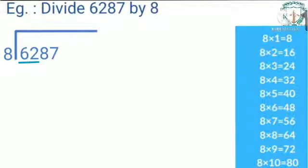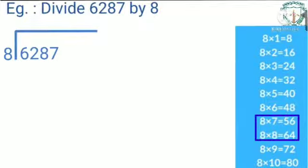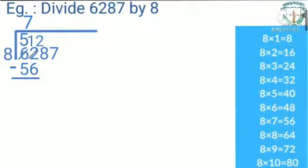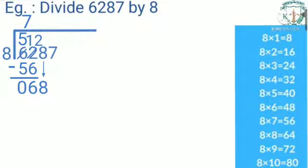Here we have 6, where 6 is less than 8, so we cannot divide 6 by 8. We need to take 2 digits, that is 62. Let us divide 62 by 8. We have 56 and 64; since 62 is less than 64, we take 56 — that is, 8 sevens are 56. Write 7 in the quotient's place and write 56 below 62 and subtract. We cannot subtract 6 from 2, so we borrow: 6 becomes 5, and 2 becomes 12. 12 minus 6 is 6; 5 minus 5 is 0.